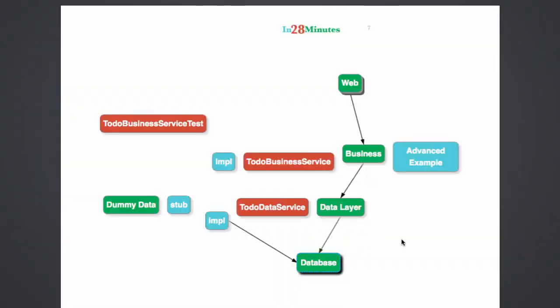What you see on the screen right now is the crux of the example we are going to discuss. This real-world example covers everything except the web layer. We have a business layer talking to a database layer — a to-do business service talking to a to-do data service. The to-do data service is a dependency of the to-do business service, and the focus is to write the unit test for the to-do business service.